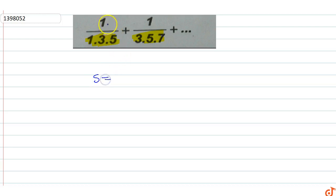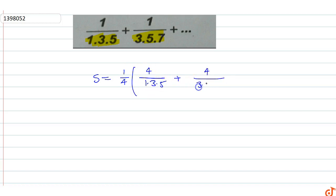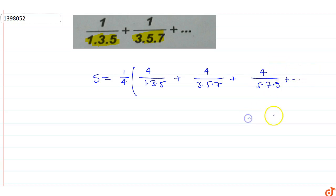S equals this. Multiply and divide by 4, so we get 4 upon 1 into 3 into 5, plus 4 upon 3 into 5 into 7, plus 4 upon 5 into 7 into 9, up to the general term 4 upon (2n minus 1)(2n plus 1)(2n plus 3).